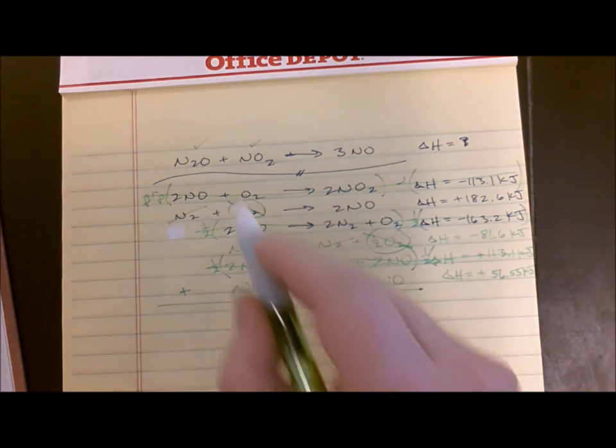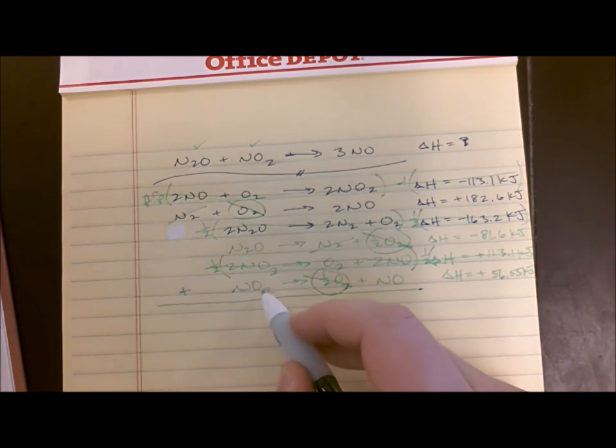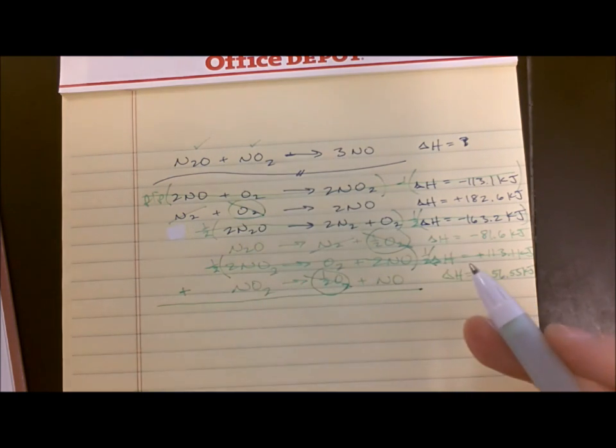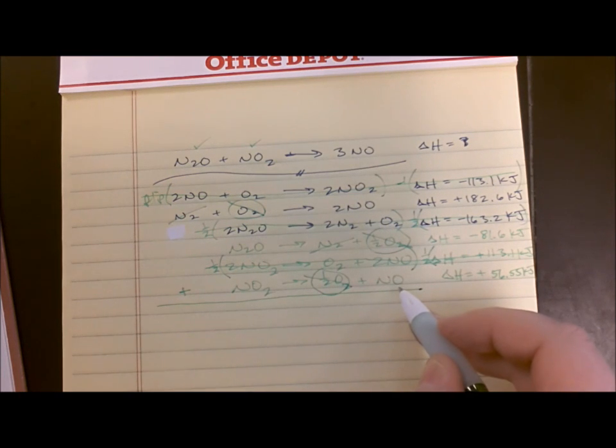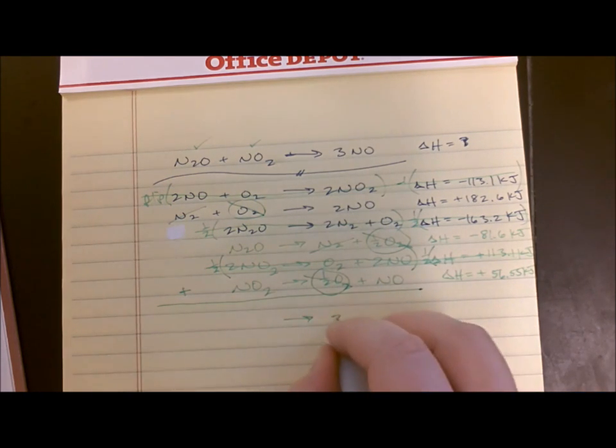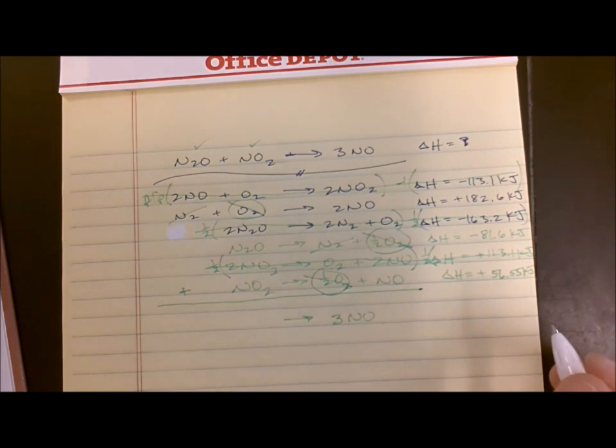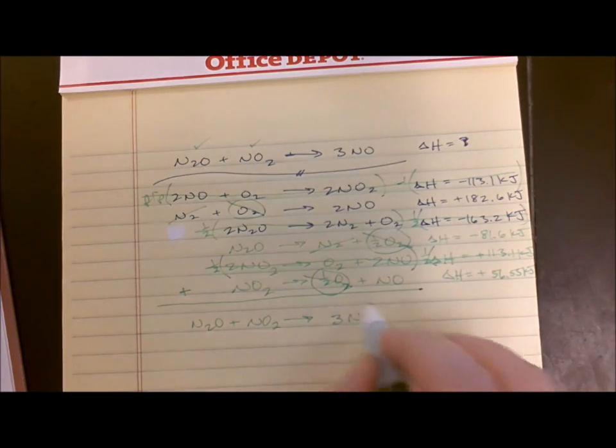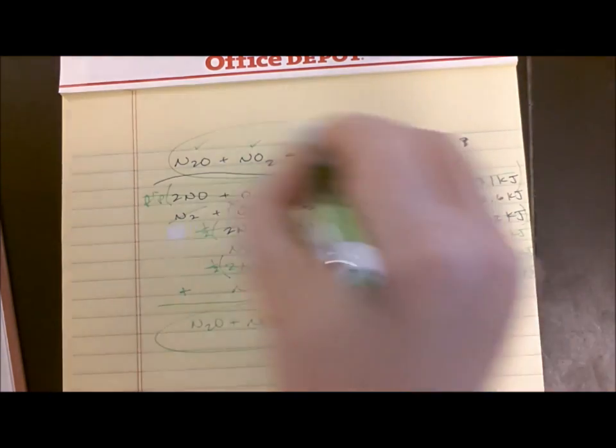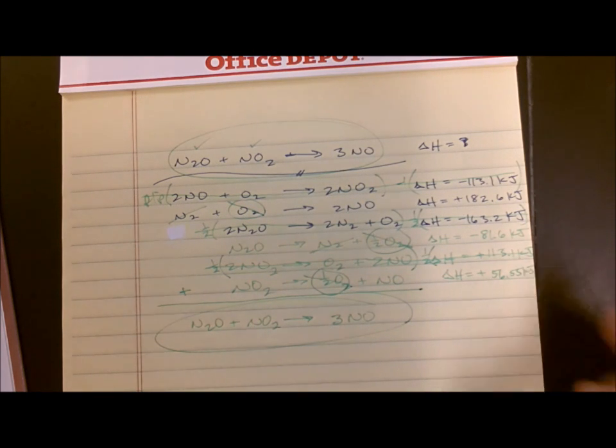Now I've got an N2O, that belongs there. I have an NO2, that belongs there. Good, they're on the proper side with the proper number in front of them. I have two NOs here and one NO there. That gives me a total of three NOs on the right, my NO2 on the left, my N2O on the left. And this matches with that. Yay!